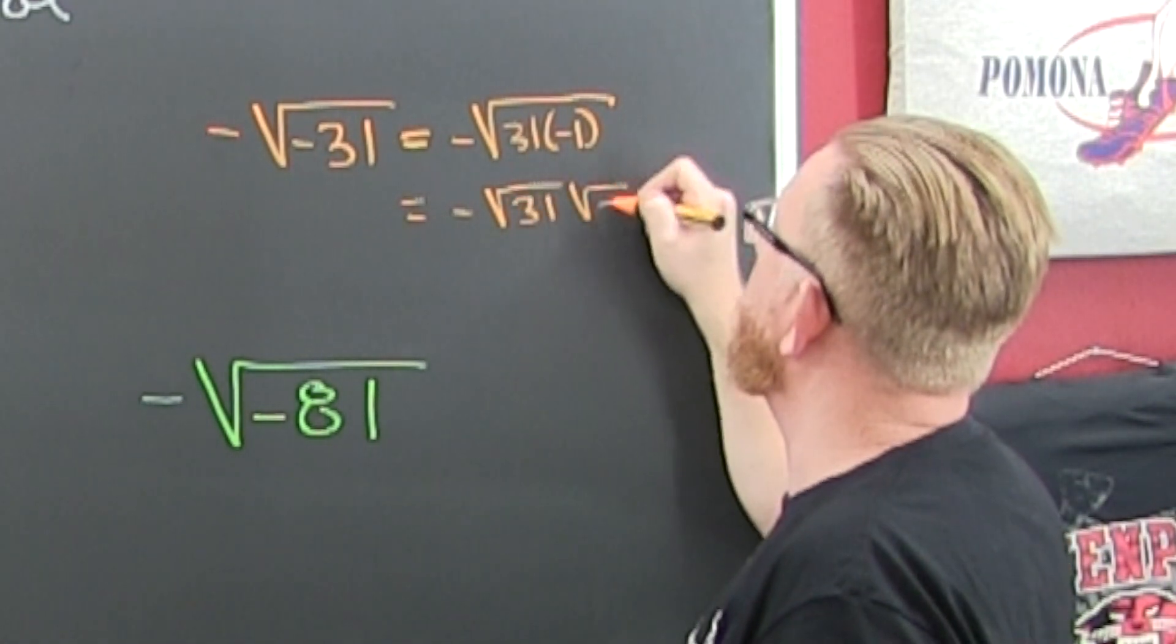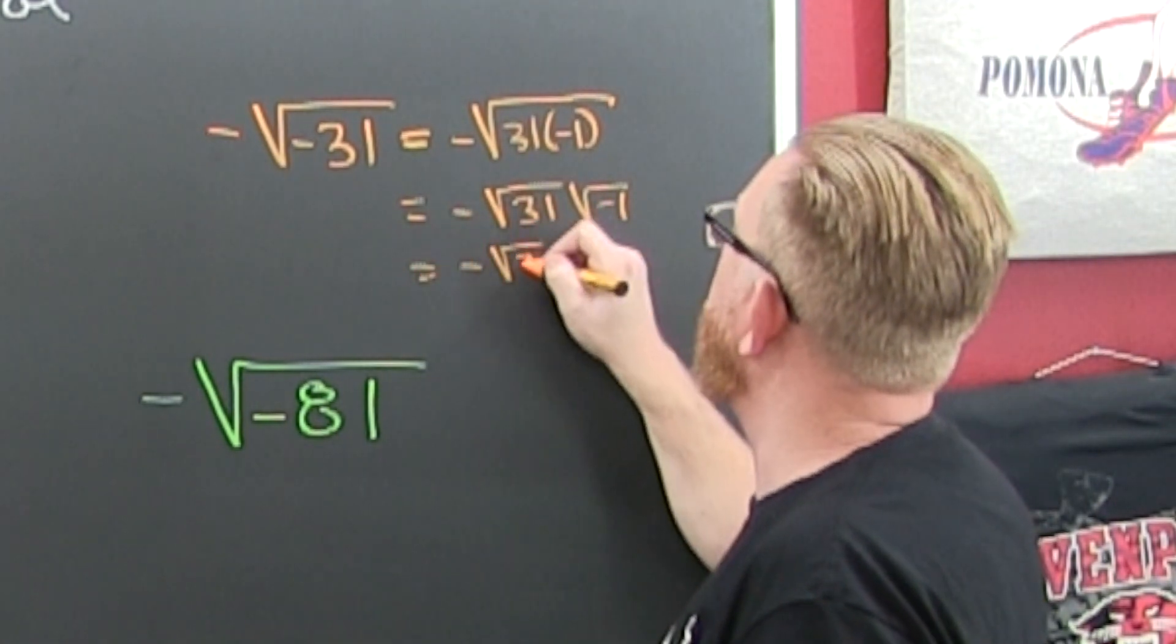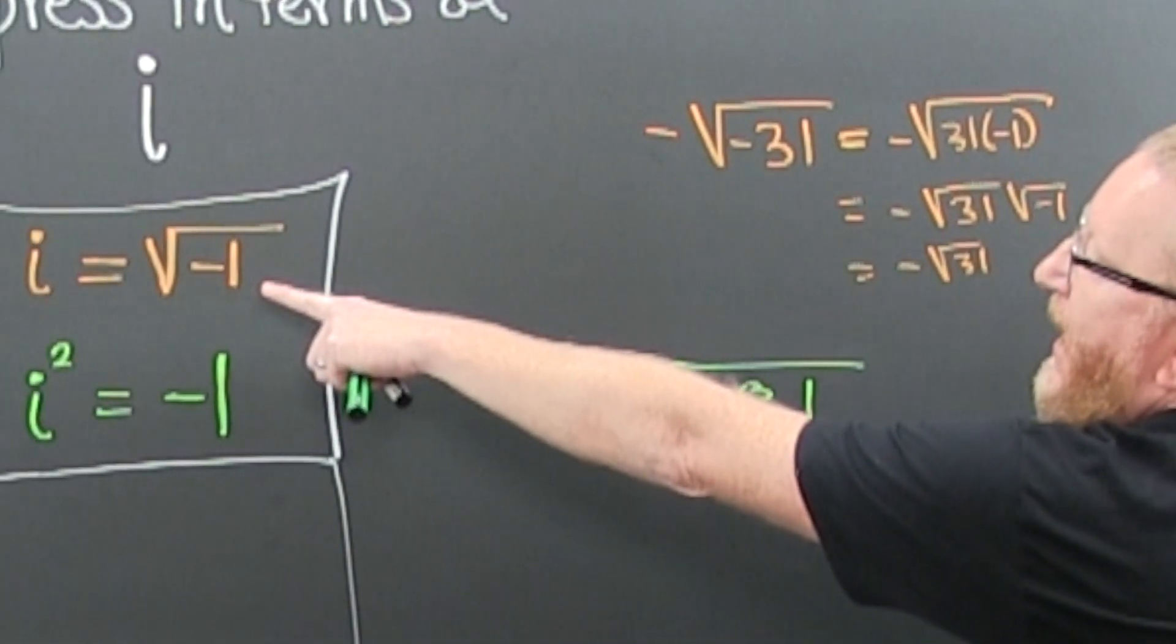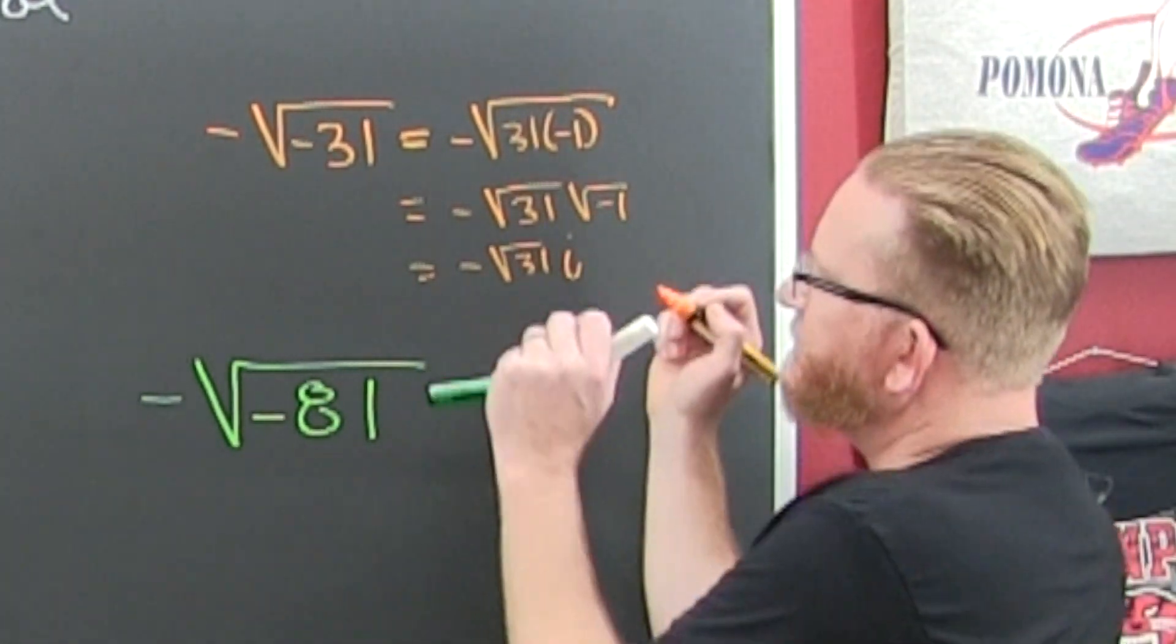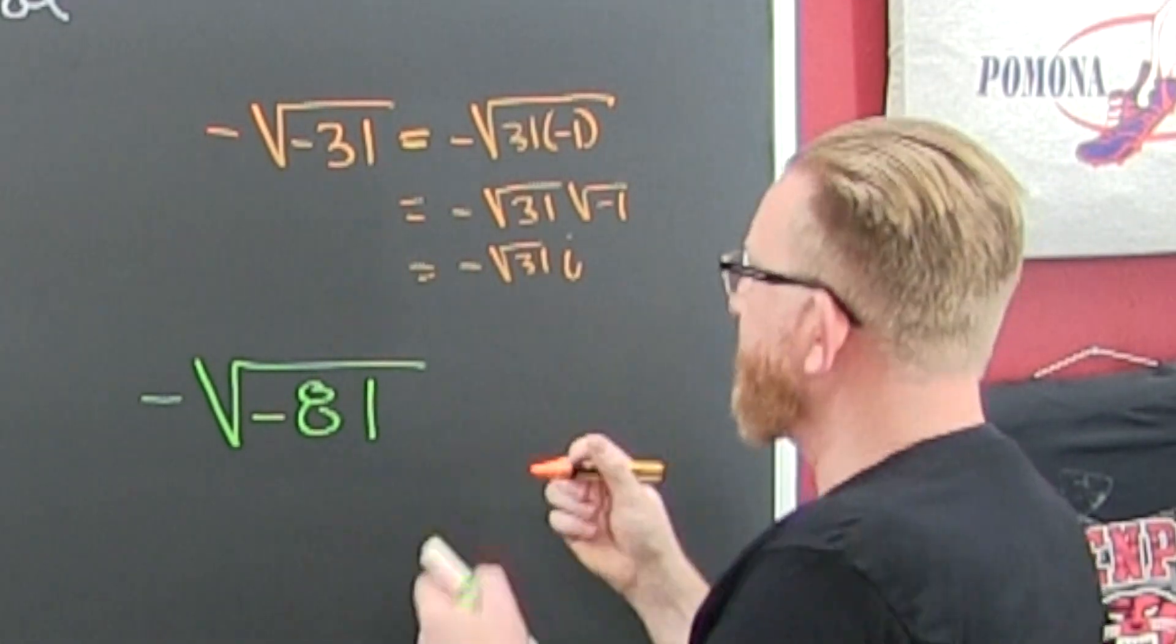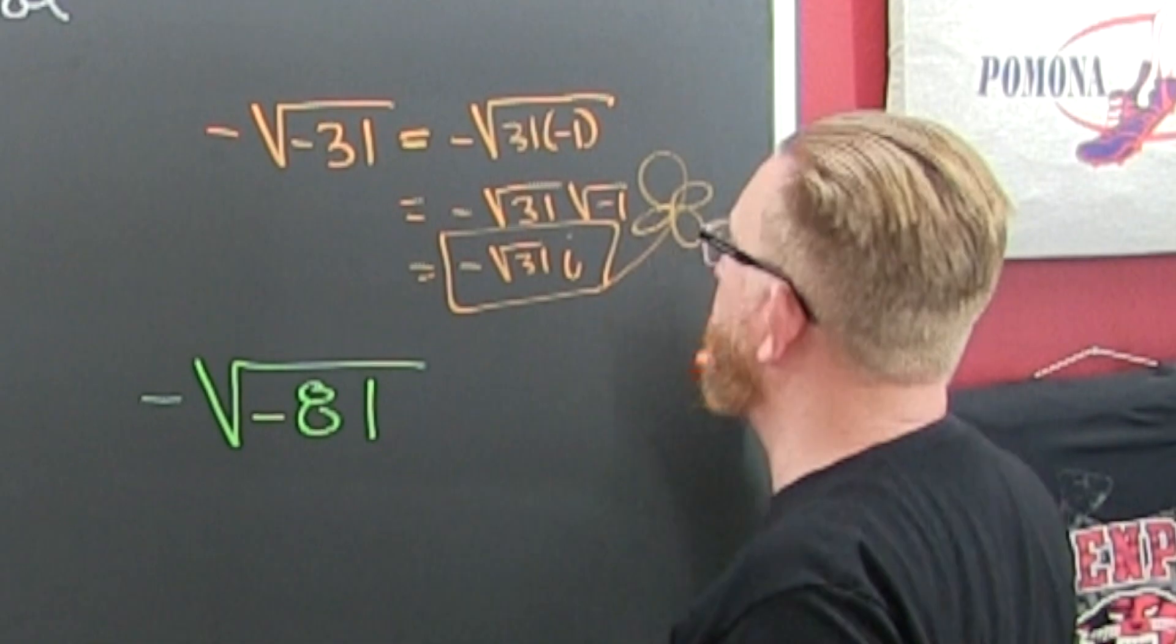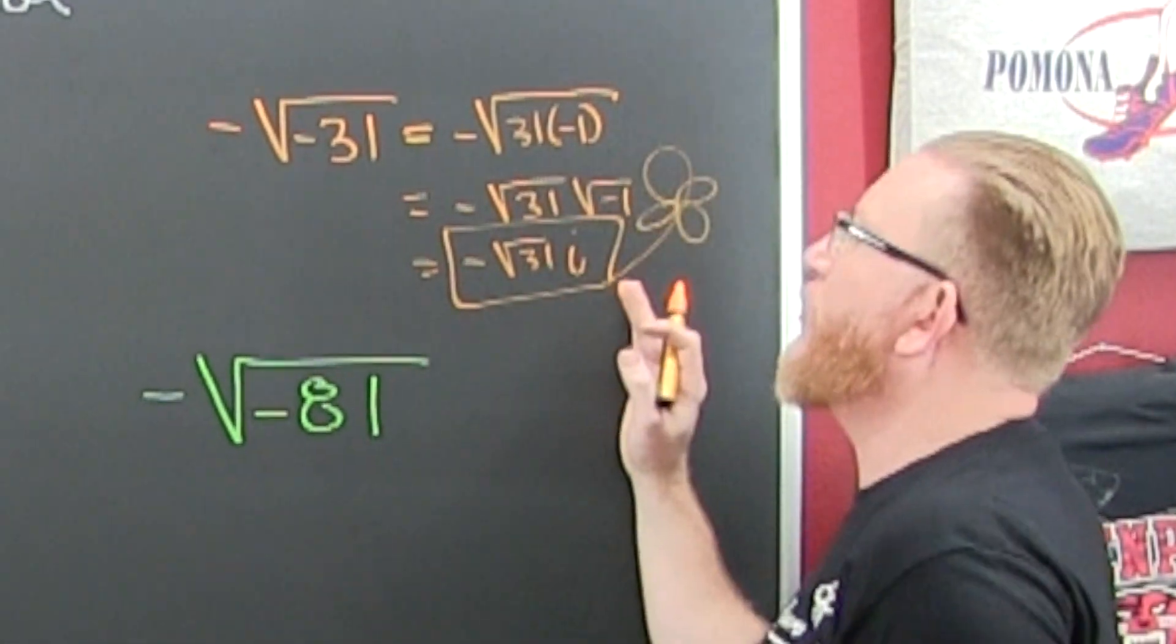times the square root of minus 1, and that turns out to be the square root of 31 times i. So we pop an i out. Well, that's just about all that. What about the square root of 31? It's irrational. Like my ex.